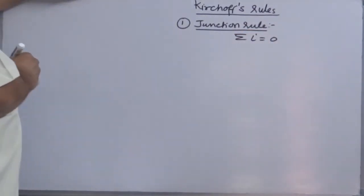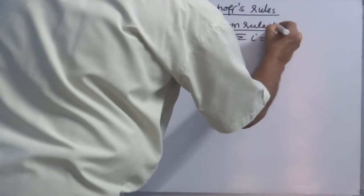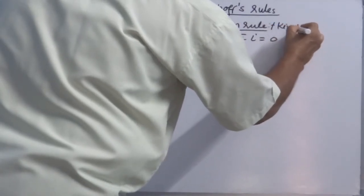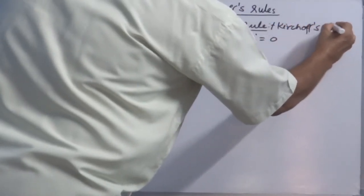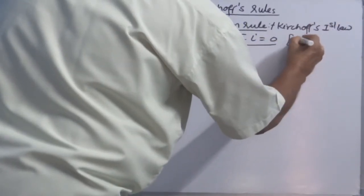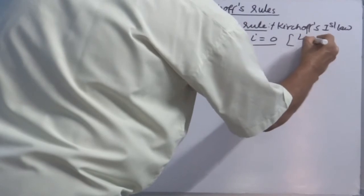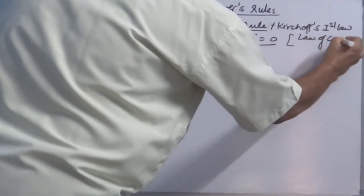So Junction rule, or Kirchhoff's first law, basically justifies law of conservation of charge.